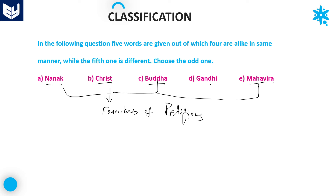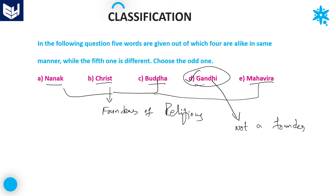All these are founders of religions, but Gandhi is not a founder of any religion. So Gandhi is the right answer for this question. Nanak, Christ, Buddha, and Mahavira are all religious founders, but Gandhi is not. Option D is the right answer.